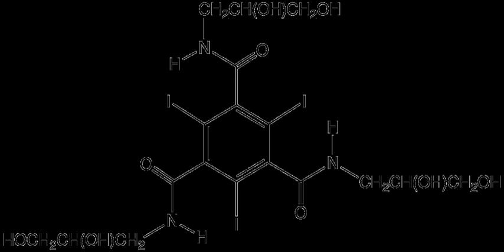Few organoiodine compounds are important industrially, at least in terms of large-scale production. Iodide-containing intermediates are common in organic synthesis, because of the easy formation and cleavage of the C-I bond. Industrially significant organoiodine compounds, often used as disinfectants or pesticides, are iodoform (CHI3), methylene iodide (CH2I2), and methyl iodide (CH3I).